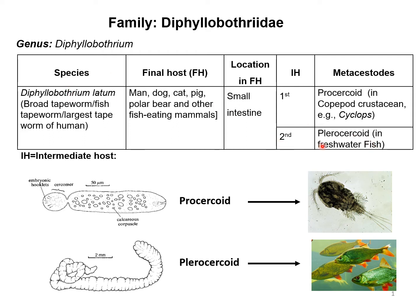The second intermediate host is different freshwater fish, in which the plerocercoid will be developed. This is a picture of the plerocercoid — a very tiny structure. You can see the scale bar to understand its size. The metacercoid is also a very tiny structure and is developed in the musculature of different freshwater fish.